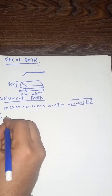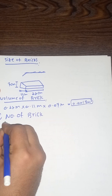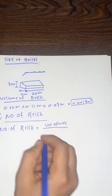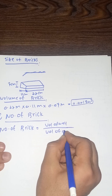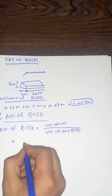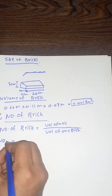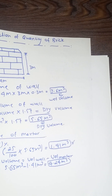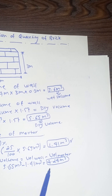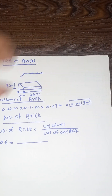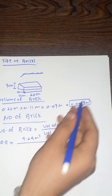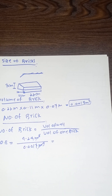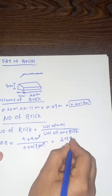Step 6: finding the number of bricks. We divide the final volume of the wall by the volume of one brick. So number of bricks equals 4.24 m³ ÷ 0.0017 m³, which equals 2494 bricks.